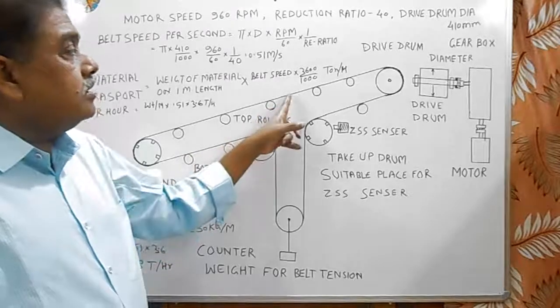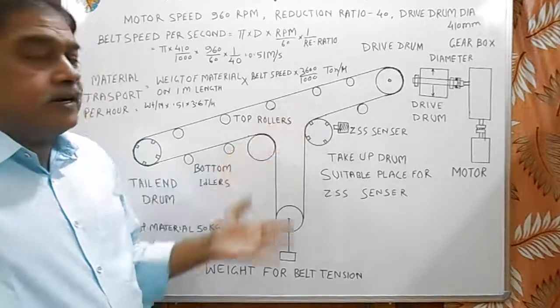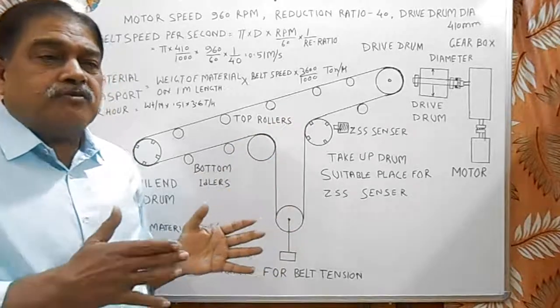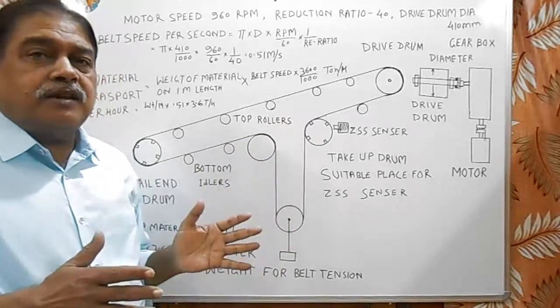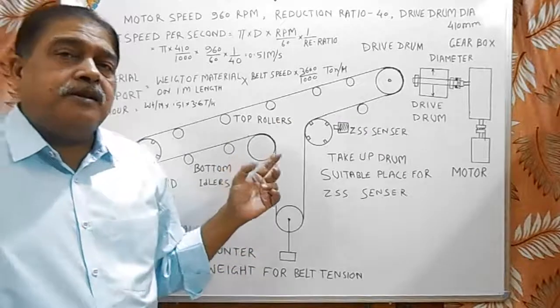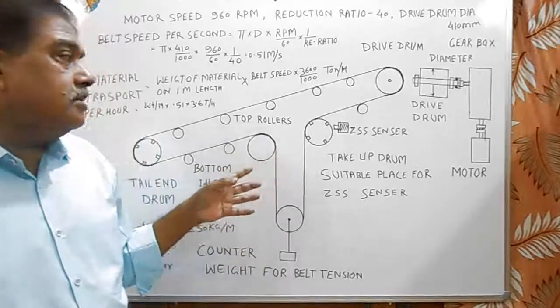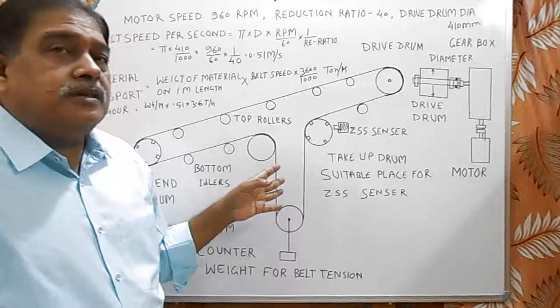In addition to that, belt sway switches are provided on both sides of the belt conveyor. So if belt sways to any side of the center, then the belt switch operates and belt stops. And this way stops the spillage of material.